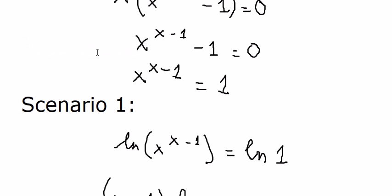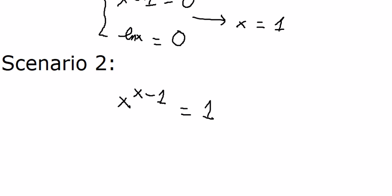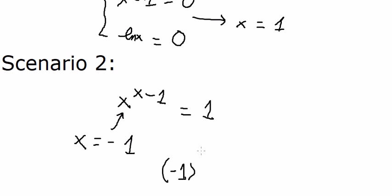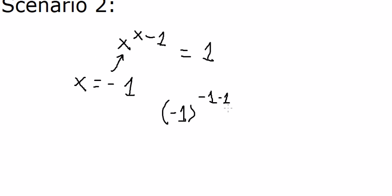Going back to the equation s^(s-1) = 1, the number one on the right is a positive number. If s equals negative one, and the power is an even number, it can also produce positive one. Let's check: negative one to the power of negative one gives negative one.